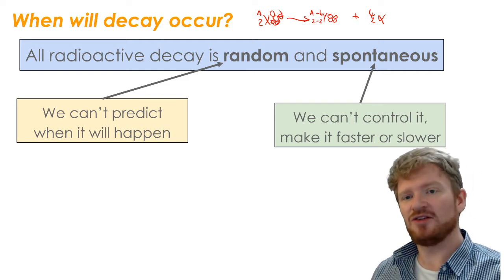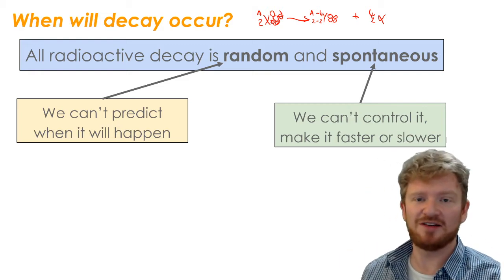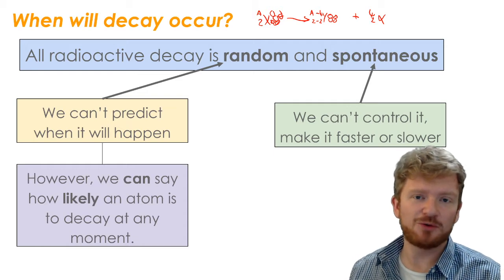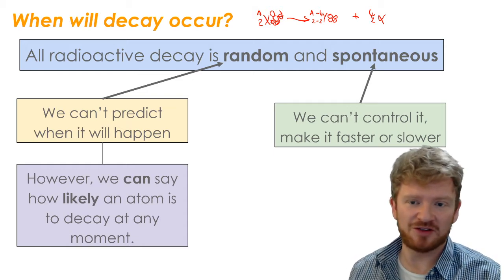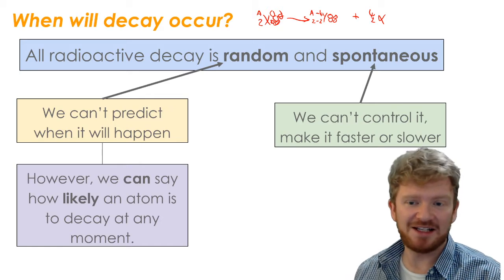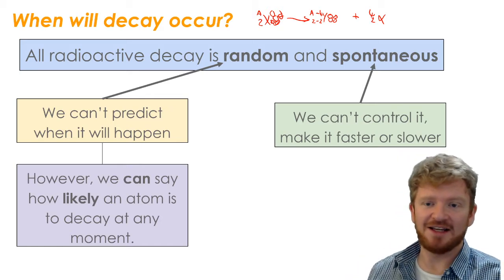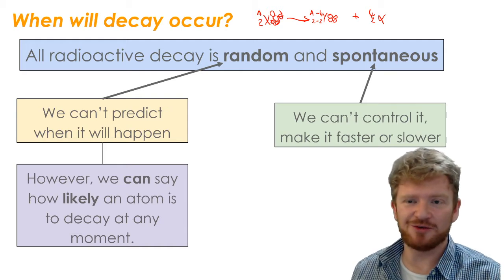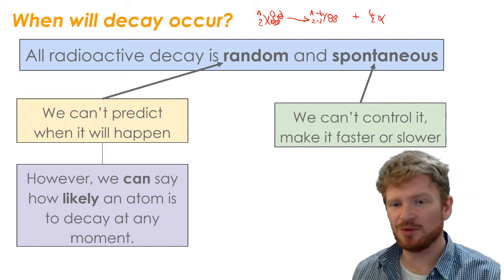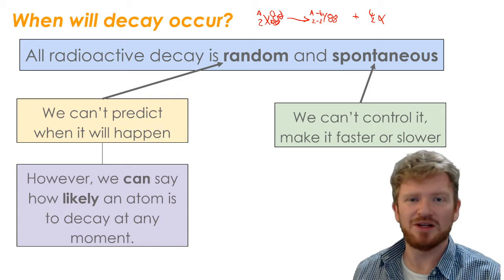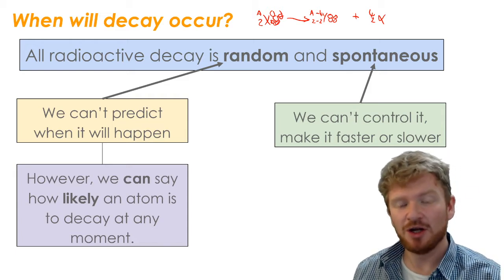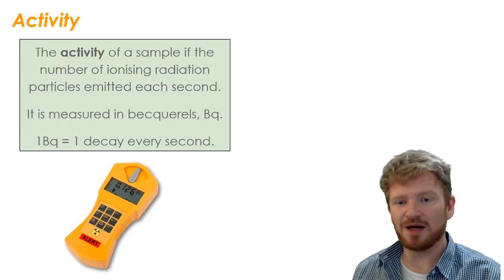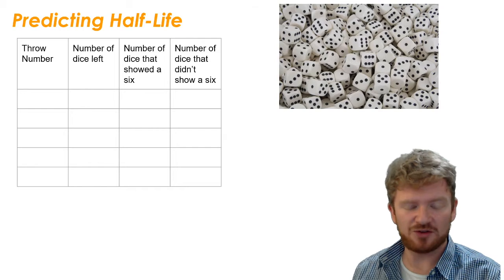So you might think that this is going to be an impossible task to ever predict what's going to happen. But while we can't predict when an individual nucleus is going to decay, we can say how likely it is to decay at any moment. Those two things can seem to be in conflict at first, but it's actually not. It's quite simple if you think about dice.